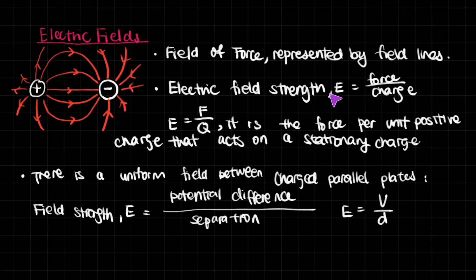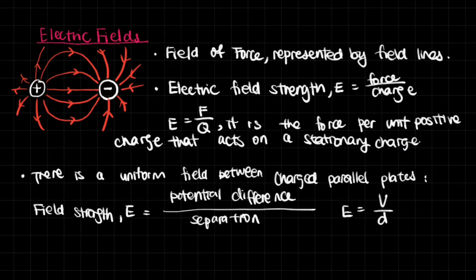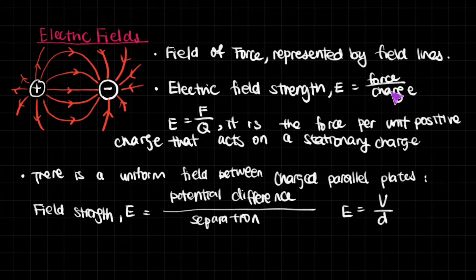The electric field strength, which is denoted by E, is basically how strong an electric field is. It's the force divided by unit charge — E is F divided by Q. It's the force per unit positive charge that acts on a stationary charge in the field. So if you have a field caused by a charge and you place one unit of stationary positive charge, the force that charge experiences is the electric field strength.